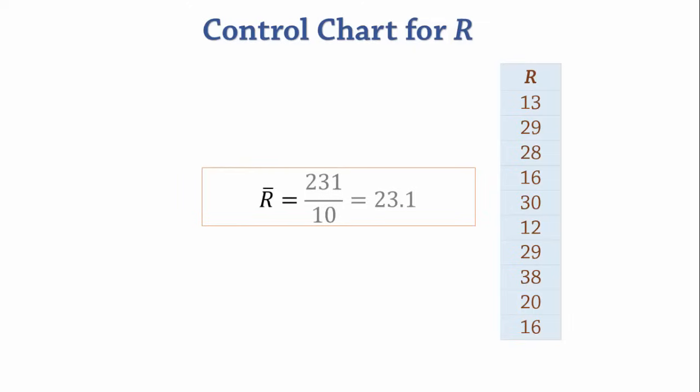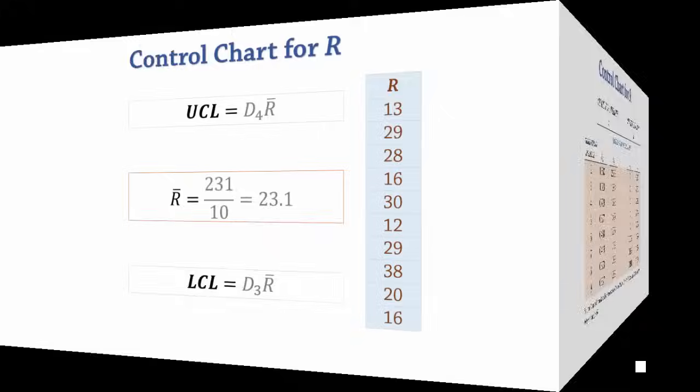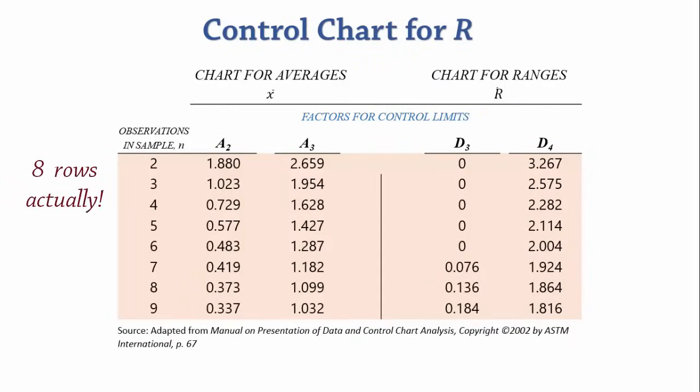The formula for the lower control limit LCL is D3 R bar and the formula for the upper control limit UCL is D4 R bar. D3 and D4 are obtained from the table of control limit constants. Here is the first 9 rows of the table. For ranges, we'll look to the right here for our D3 and D4 values.